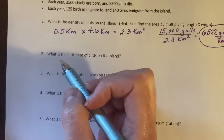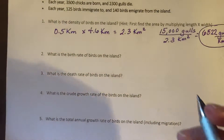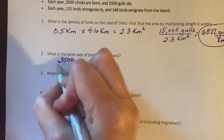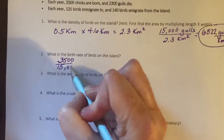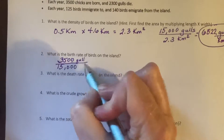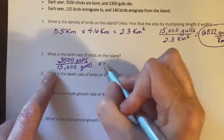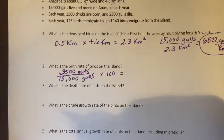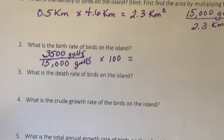What's the birth rate? Back to our formula sheet — the birth rate is births over total population. So here we have 3,500 birds born over our total population of 15,000. The gulls cancel out, so you divide that and multiply by 100 to get a percentage. Round to three sig figs.